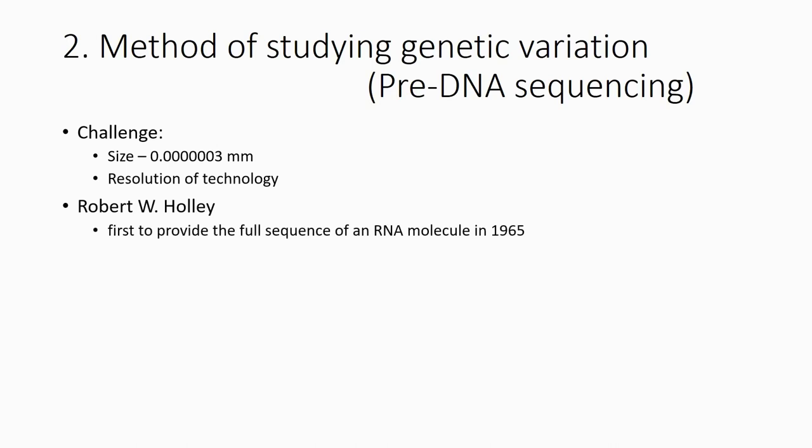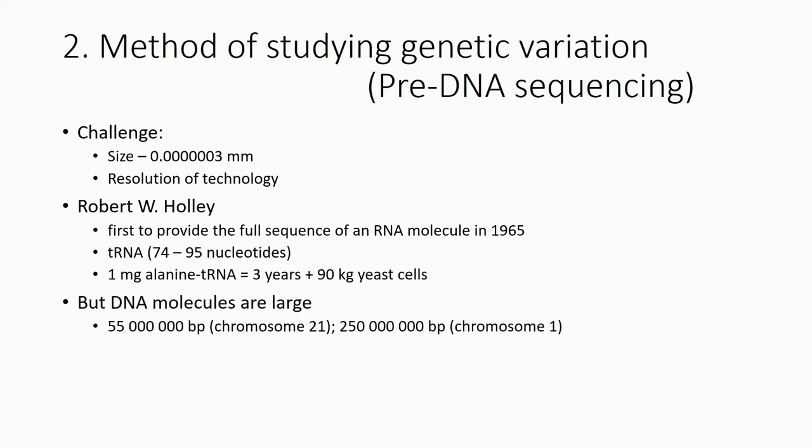In 1965, someone spent a lot of time just to produce a sequence — it was an RNA molecule from yeast, specifically a tRNA molecule of less than 100 base pairs. In order to get one milligram of that tRNA, they spent three years and used up to 90 kilograms of yeast. This gene is quite small, but usually your chromosomes are very large.